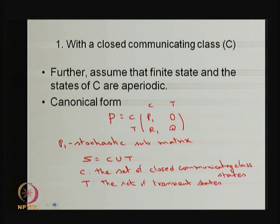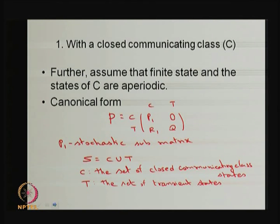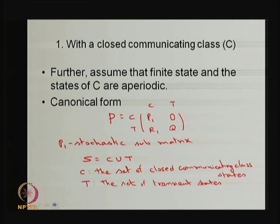For the first type — a reducible Markov chain with transient states and one closed communicating class — our interest is the stationary distribution. I make the assumption of a finite state space. The state space S equals C union T, where C is the closed communicating class and T is the set of all transient states.